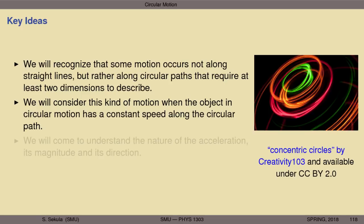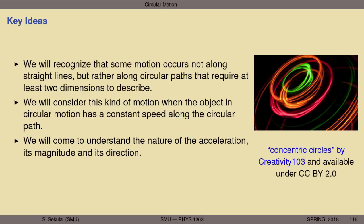Something is changing, though. We're going to understand that circular motion is a kind of motion where the speed may remain the same — at least in uniform circular motion — but where the direction of the velocity, not its magnitude but its direction, is constantly changing. We're going to understand the nature of the acceleration that results in this form of motion, its magnitude and direction, and how that relates to the magnitude and direction of the velocity itself.